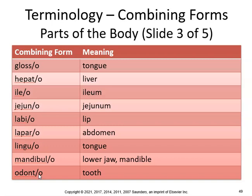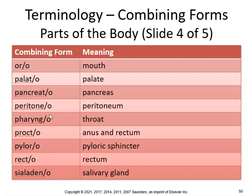Odonto — orthodontist. You know what an orthodontist is? A dentist specializing in straightening the teeth. A periodontist would be a dentist specializing in gums. An endodontist is a dentist specializing in operating within the tooth, such as a root canal. Oro, like oral, pertaining to the mouth. Palate — think about a palatoplasty, surgical repair of the palate.